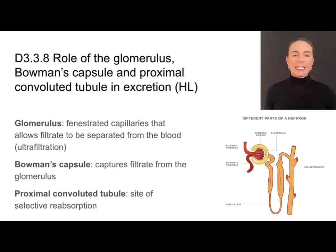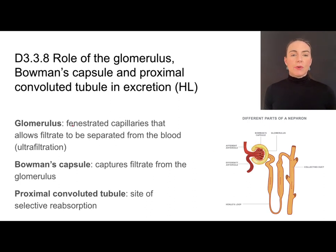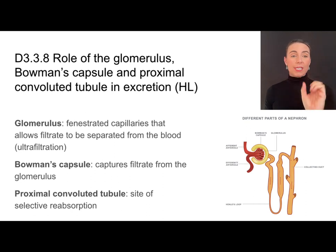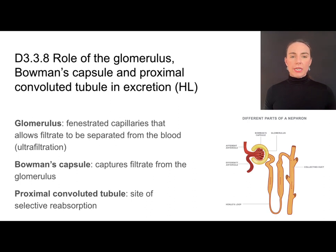First let's define these terms. The glomerulus is made of fenestrated capillaries — fenestrated means it has holes in it. In some languages, 'fenster' means window. So these are literally capillaries with holes in them, and this allows filtrate to be separated from the blood in a process called ultrafiltration.